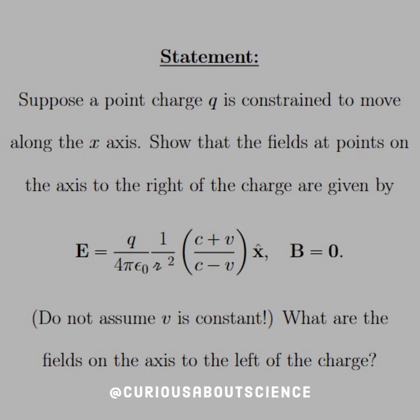Show that the fields at points on the axis to the right of the charge are given by E equals Q over 4πε₀ times 1 over script R squared, parentheses C plus V over C minus V, in the x-hat direction and B equals 0.